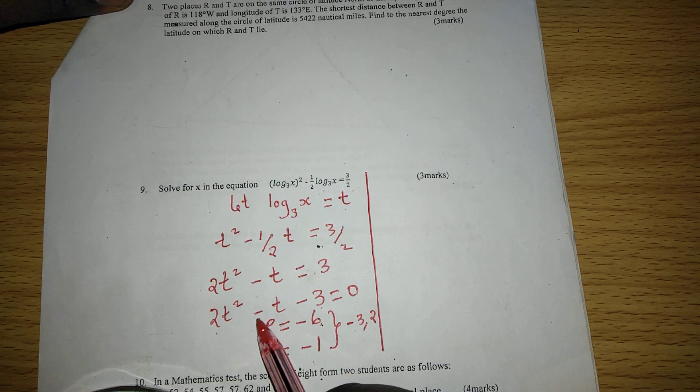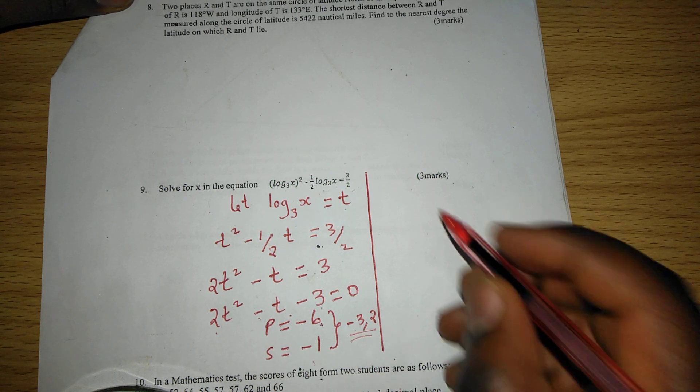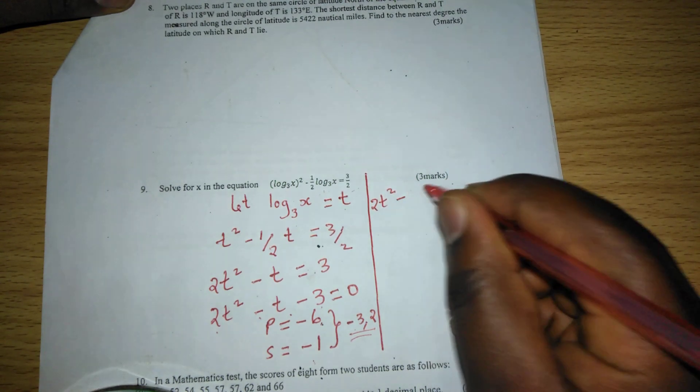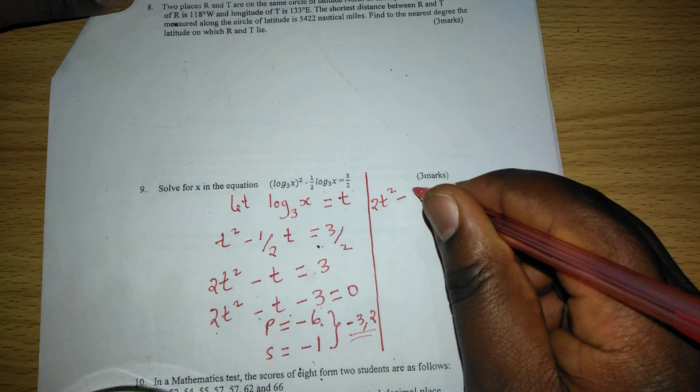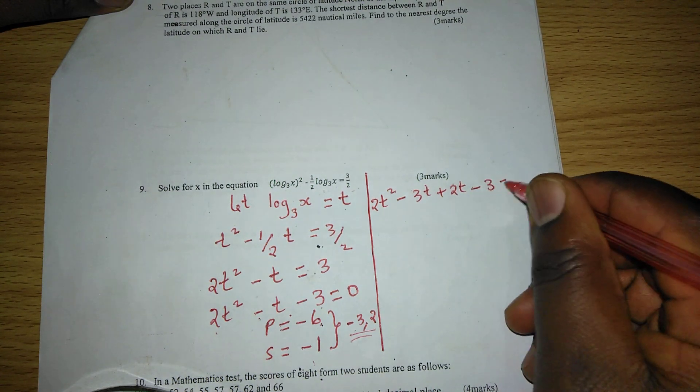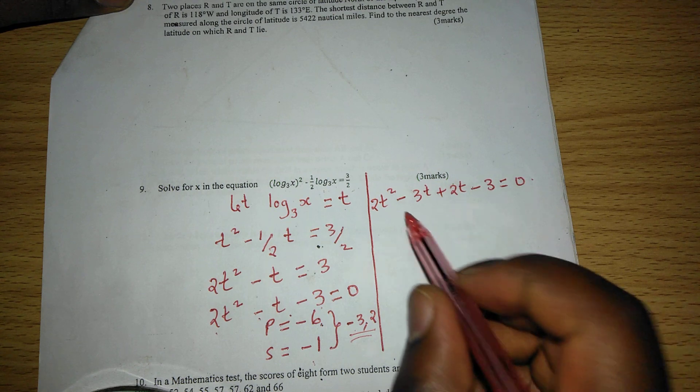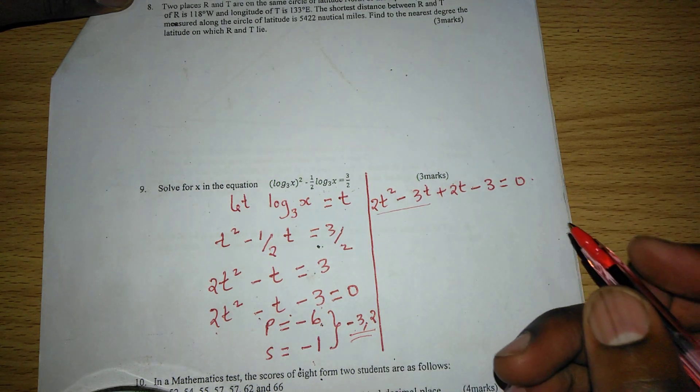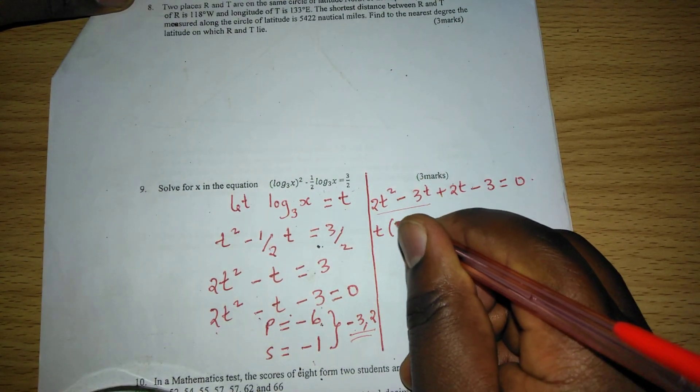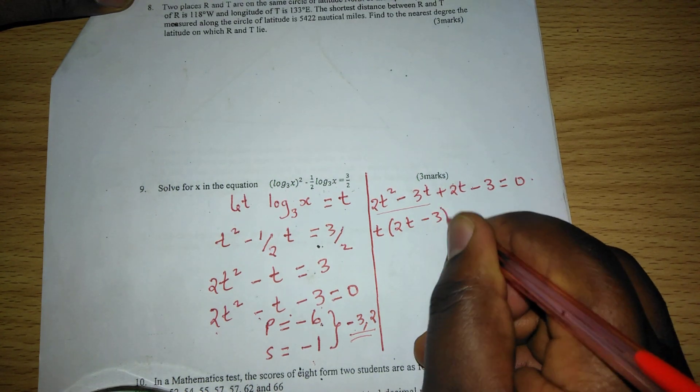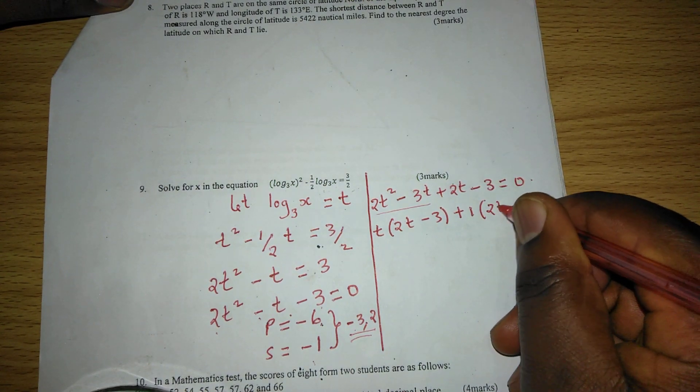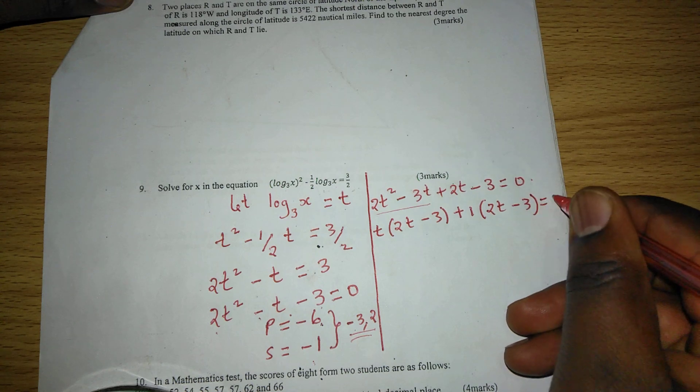Now we can replace negative t with these two factors, such that the equation will now read 2t squared minus 3t plus 2t minus 3 equals 0. At this point, with every two terms we can factor out the common factor. In the first one we have t common, remaining with 2t minus 3, then plus 1, and in brackets we shall have 2t minus 3 equals 0.